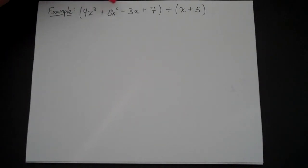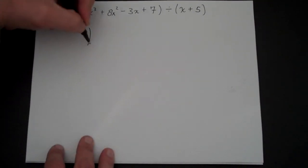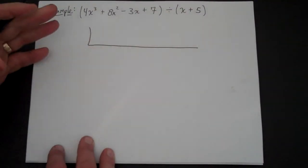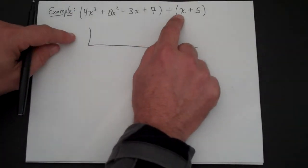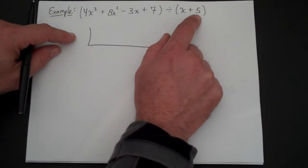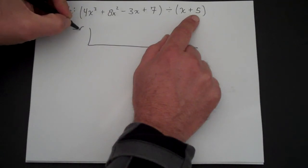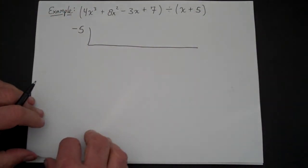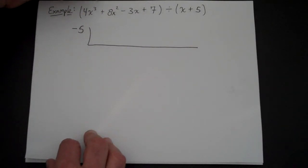We have 4x cubed plus 8x squared minus 3x plus 7, divided by x plus 5. What you're going to do here is you're going to do the division bar but upside down. Now this is going to seem a little weird, but if you get the process, this becomes a very easy way to do long division problems. We're only doing this when it's x plus or minus a number. You're going to take this number and change the sign — this is a positive 5, so you make it a negative 5. Then you write down all the coefficients but not the variables, in order. If there's one missing, you put a zero.